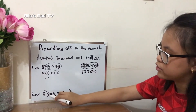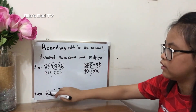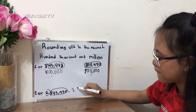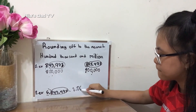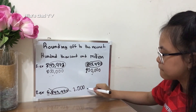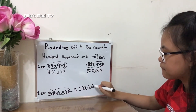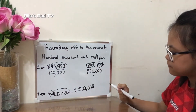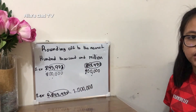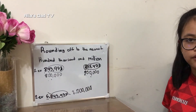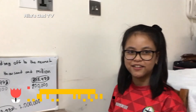Just like before, you change the rest of the numbers into zero. Now I have explained to you how to round off to the nearest hundred thousand and million. Thanks for watching.